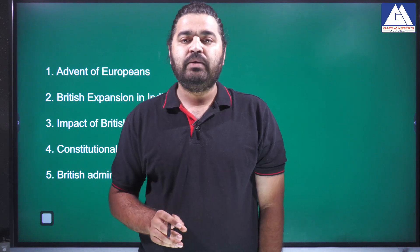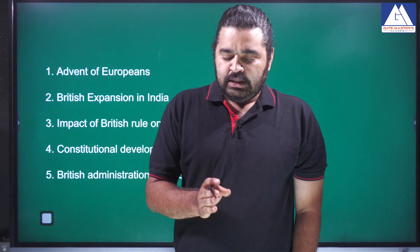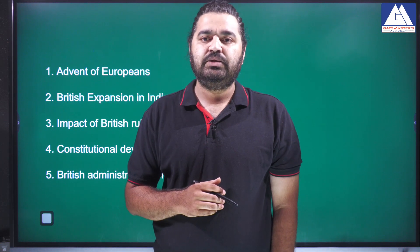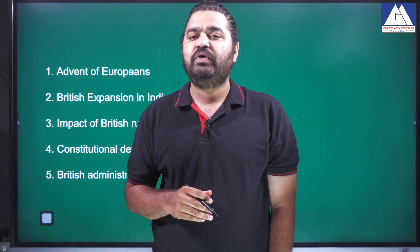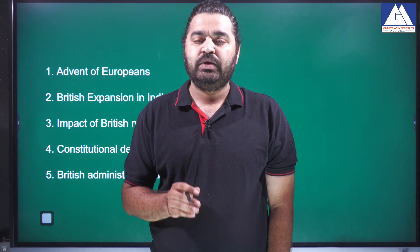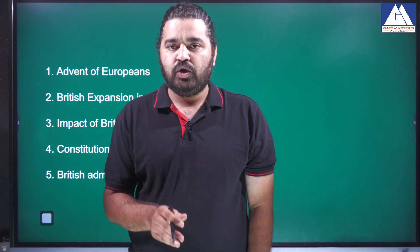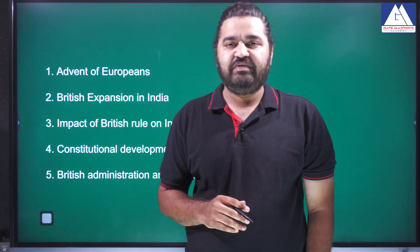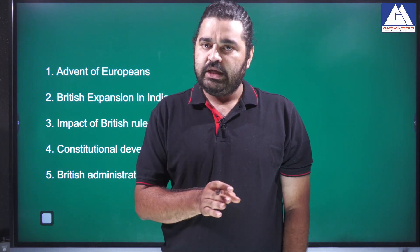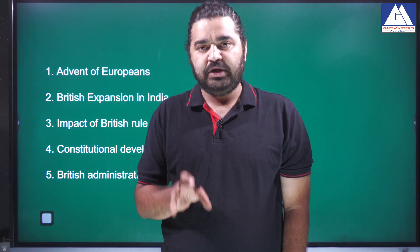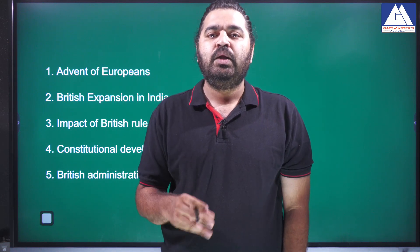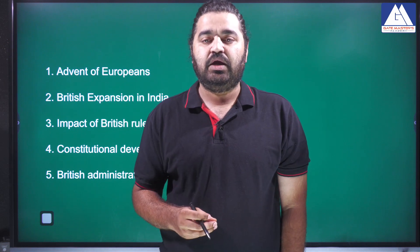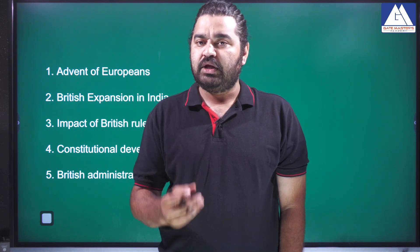British rule is divided into two phases: 1757 to 1858 under East India Company administration, and 1858 to 1947 under the British Crown. So constitutional developments from 1757 to 1858 form the fourth chapter.